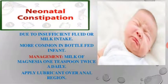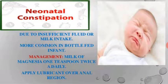Neonatal constipation is due to insufficient fluid or milk intake and is more common in bottle-fed babies. Management: milk of magnesia 1 teaspoon twice daily, and apply lubricant over the anal region.